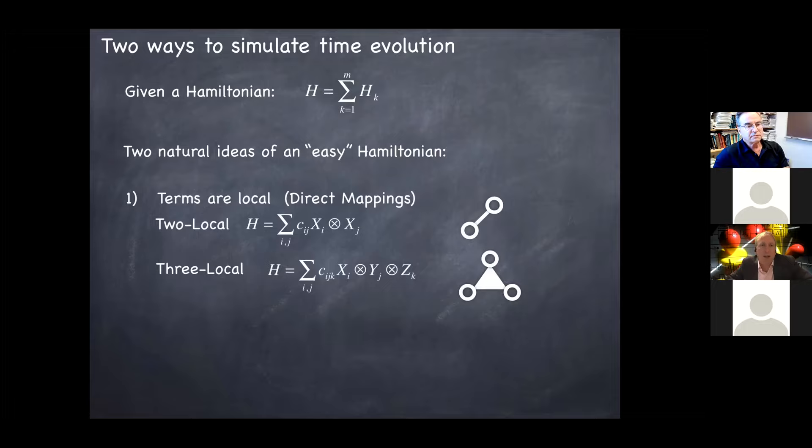And the first one is locality, which is a very natural thing to think about if you've ever thought about spin models in condensed matter. This just means that the Hamiltonian is a sum of terms and each term is local, meaning it couples a bounded number of qubits. So typically in condensed matter models, you would think about coupling pairs of qubits or if you're thinking about something exotic, maybe triples or quadruples. In fact, in the mappings we use for quantum chemistry, we get mappings which have logarithmic locality. So they couple a number of qubits which is growing with the total number of qubits, but only very slowly. So that's the local mapping.